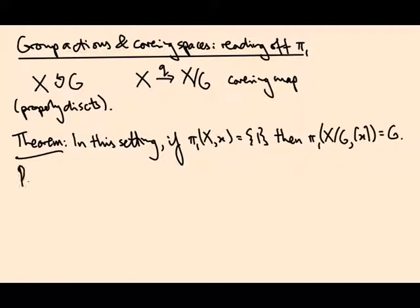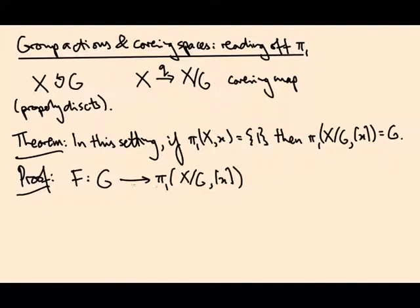The way we're going to prove it is we're going to write down a map F from G to π₁ of the quotient. Then we're going to prove that it's a homomorphism, it's an injection, it's a surjection.